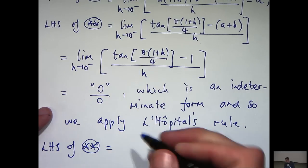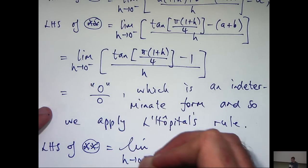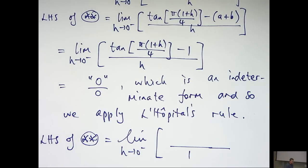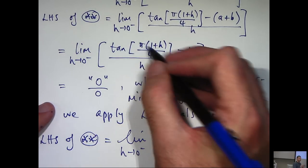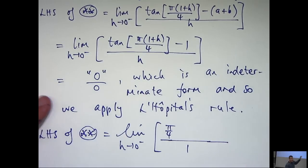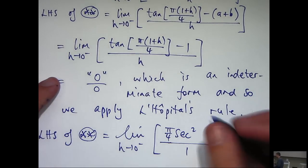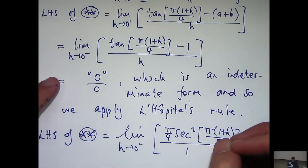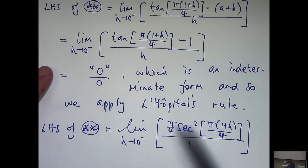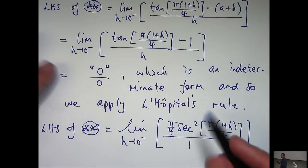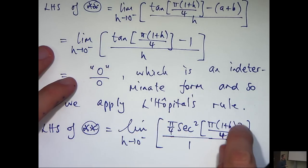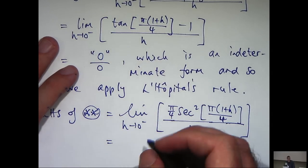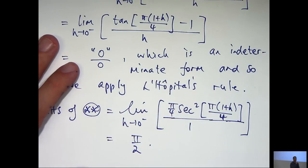So, let's differentiate the top, differentiate the bottom. The bottom is very easy. We'll get 1 down the bottom. Up the top, tan will go to sec squared and a factor of π on 4 will come to the front. So now, hopefully, I can retake my limit and I'll get an answer here. If I take my limit, I'll get 0 for h here, so I'll get π on 4 sec squared π on 4. If you work this out, it will just be π on 2.